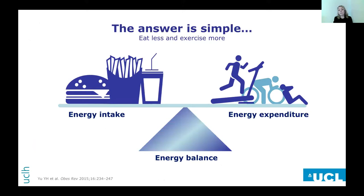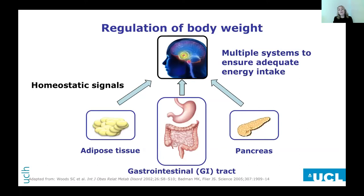Lots of people think body weight regulation is simple — energy in, energy out. But if it was that simple we wouldn't be having a global epidemic. The maintenance of adequate energy intake is essential for survival, so during the course of evolution we have developed multiple systems that ensure that we eat. There are homeostatic signals from adipose tissue, the GI tract, and the pancreas that act upon the hypothalamus and the brain stem to regulate energy intake — and these are all focused on making us eat rather than stopping us eating. Through transgenic mice and genetic mutations in humans we have a really good understanding of appetite regulation at the neuronal level.